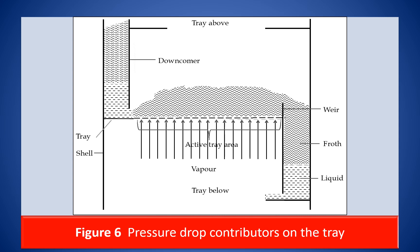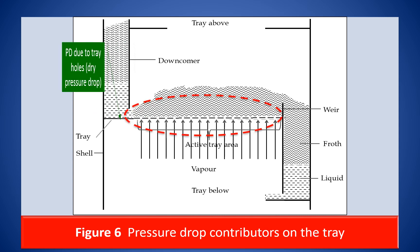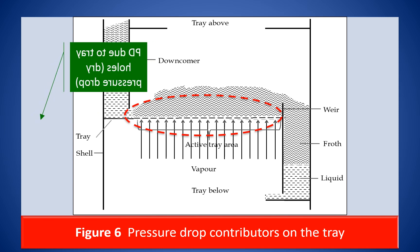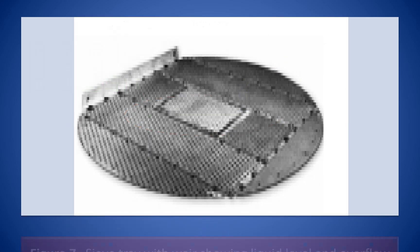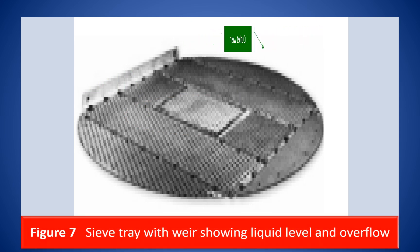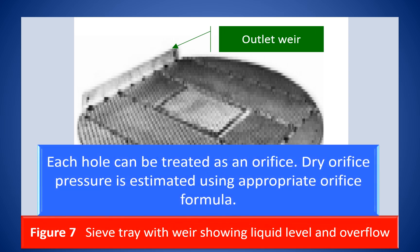This sketch illustrates the pressure drop contributors on a typical tray: one, due to the tray holes; and two, due to the tray inventory of liquid. Shown in the figure is a sieve tray. The tray consists of several small holes. The vapour issues through the holes at high velocity. Each hole can be treated as an orifice. Hence, the pressure drop through a hole is similar to the one that occurs when fluid flows through an orifice.